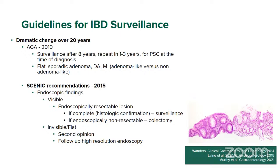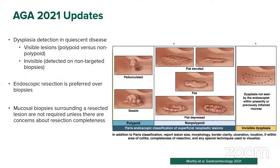For invisible lesions, the SCENIC recommendations require a second opinion from a GI pathology consultant. Once confirmed as dysplasia in a random biopsy, it is followed by high-resolution endoscopy rather than immediate resection. If high-grade dysplasia is found on follow-up and remains invisible, colectomy is recommended. The 2021 guideline update did not change much from 2015. Dysplasia detection should be done in the quiescent phase of disease, and endoscopic resection is now preferred over biopsies alone, with histologic confirmation no longer strictly required.